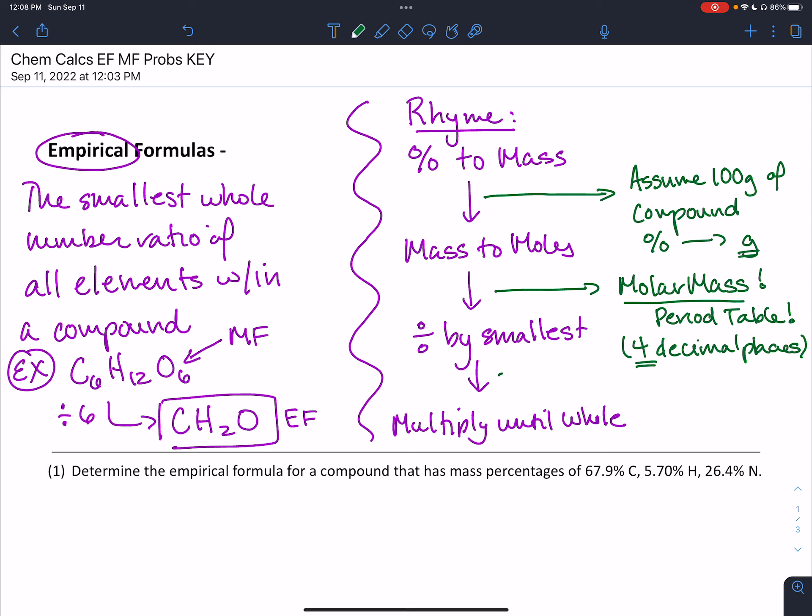The last step, multiply until whole, is not always needed. This pops up when you divide by the smallest and look at those values. They should be whole numbers, but every now and then you might get one and a half or two and two-thirds. We can't have fractions of atoms, so that requires us to multiply by a whole number factor to get everything to a whole number. In general: percent to mass, mass to moles, divide by smallest, and then multiply until whole.